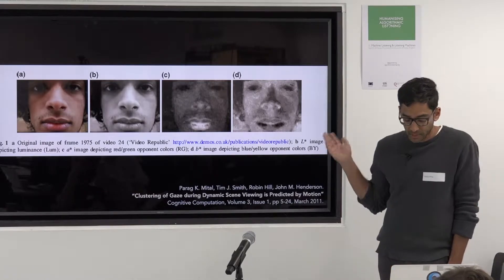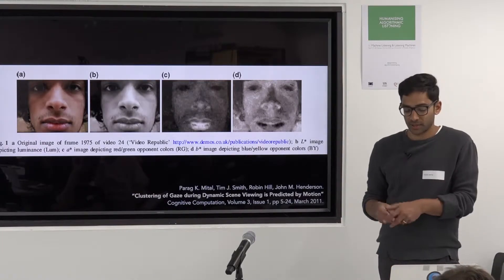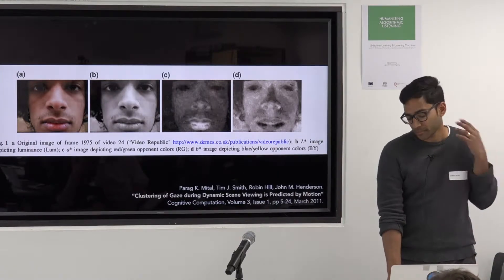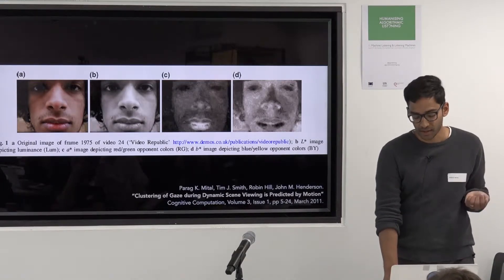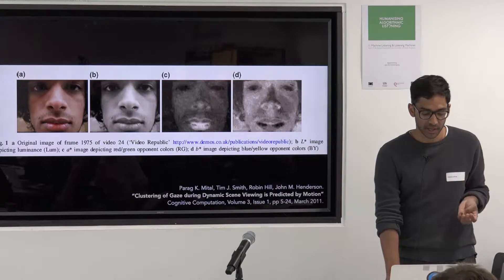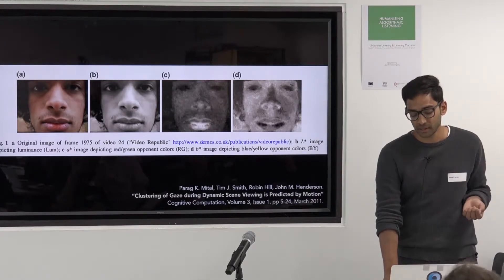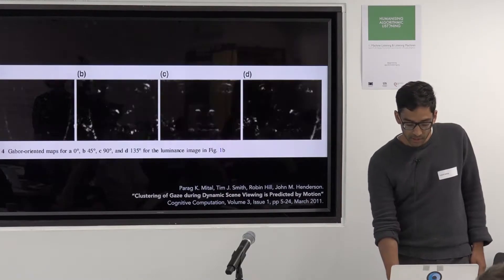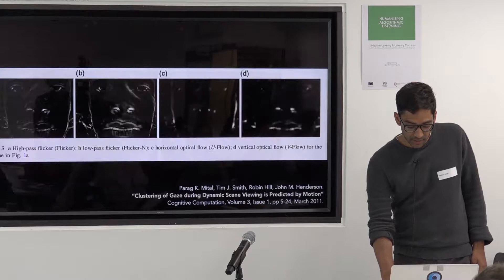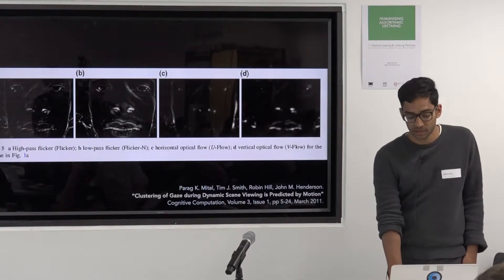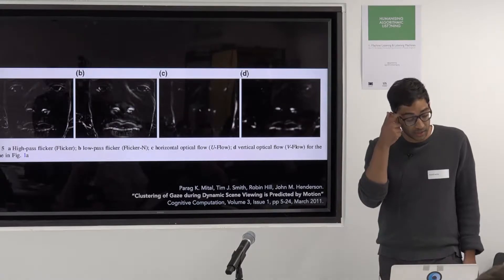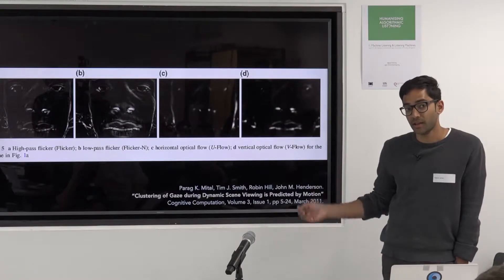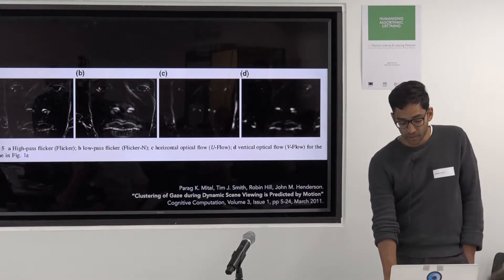We looked at all the different standard ways of analyzing visual cognition and attention, examining all the different visual features that psychophysical research had done — static features like edges, luminance, color-opponency, orientation-selective filters from seminal research like Hubel and Wiesel. We also looked at dynamic features, like how the scene changes over time by doing simple frame differencing, as well as using more computationally intensive algorithms like image alignment over time and optical flow.